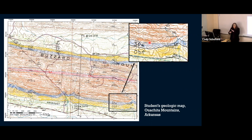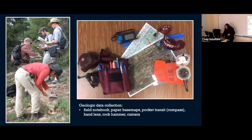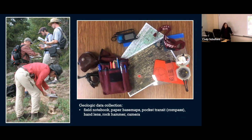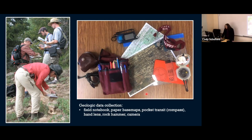Once you complete the entire map, this can be done with very low-tech instruments and tools. This is me taking a strike and dip, collecting it on the edge of a rock layer. The tools are a field notebook, paper-based map, a pocket transit compass, a hand lens, rock hammer, and camera. That's pretty much what you need — pretty low-tech. You can collect all this information.